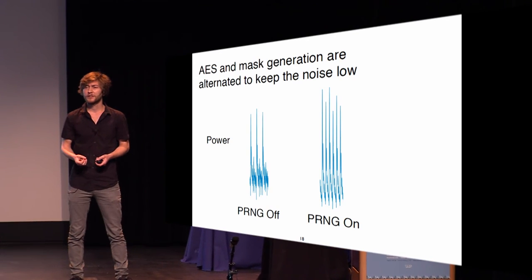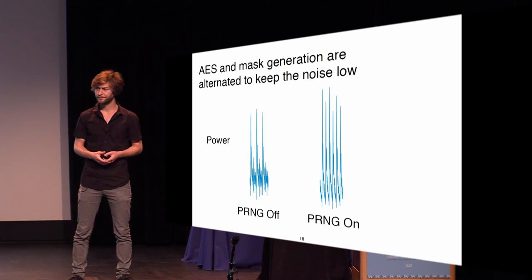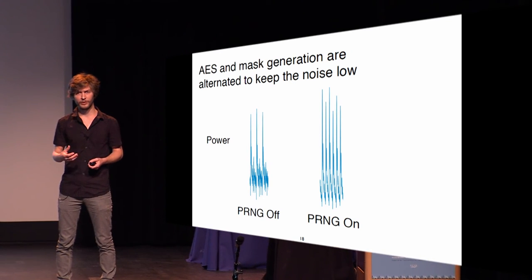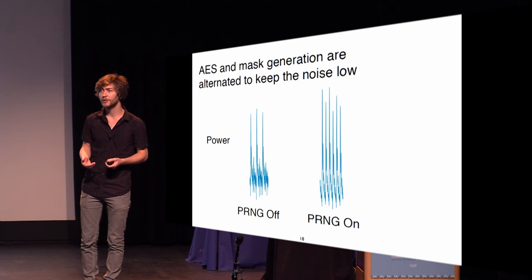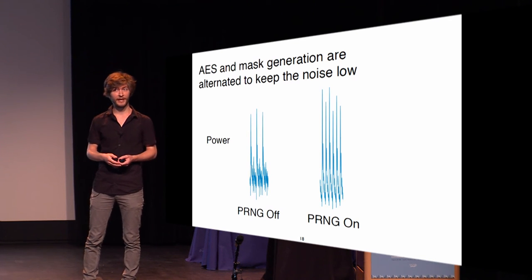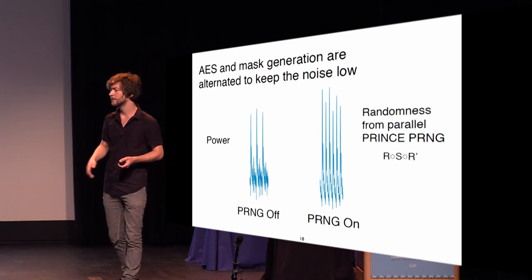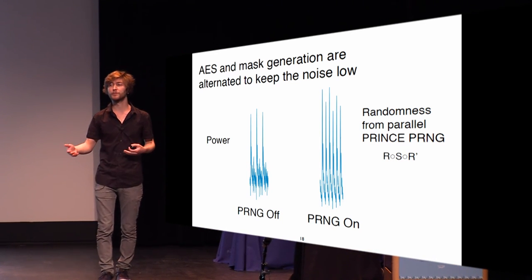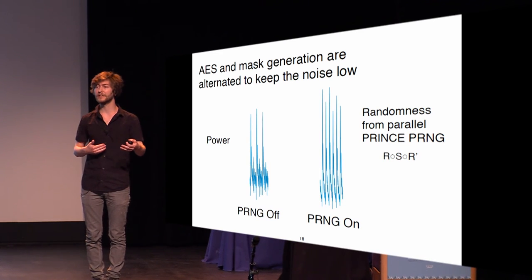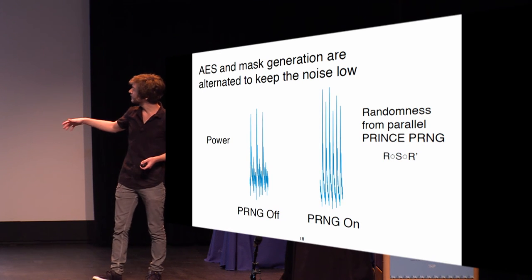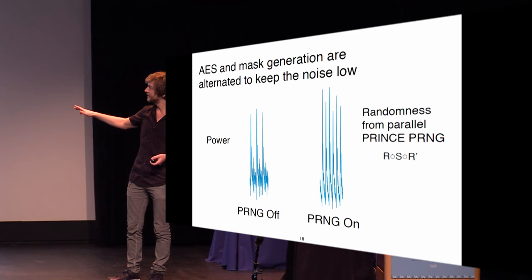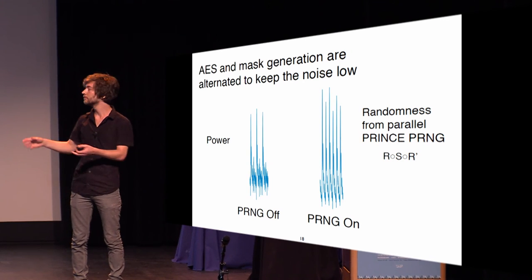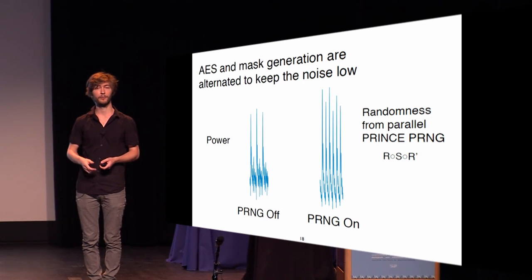We have a lot of fresh random masks to generate, and we chose to generate them together with AES. In order not to increase the noise, we alternate every clock cycle of AES with every clock cycle of the random number generator. For the RNG we use the Trivium inner function from PRINCE, and based on how many bits we need we instantiate some of these in parallel. From the figures you can see that when the PRNG is off there is minimal activity between the AES clock cycles, and when we turn it on those peaks rise.